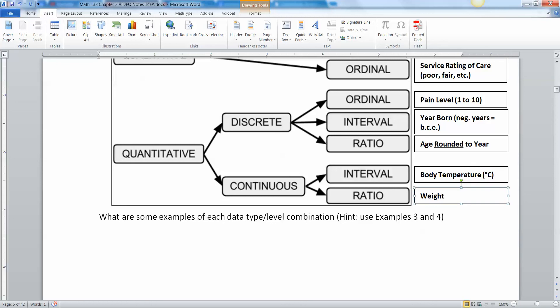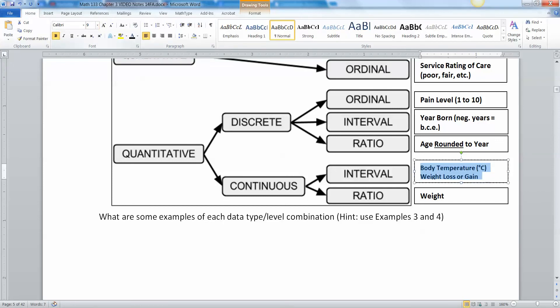So again, can be negative is interval, cannot be negative is ratio. So year you were born, years in general, calendar years, 2095, 102 years in history class, that's interval. The age that you are rounded to the nearest year, that is ratio. Your body temperature is interval. Temperature in general can be negative. Your weight on the other hand cannot be negative. Another way you could put it to yourself would be weight loss or gain. I've lost five pounds, that'd be negative five. I've gained five pounds, that'd be positive five.